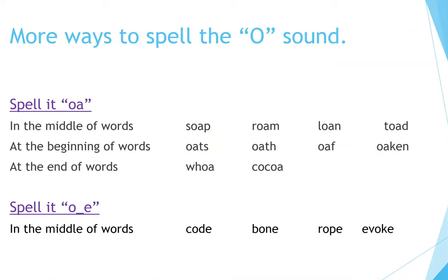More ways to spell the O sound. Spell it OA: in the middle of words — Soap, Roam, Loan, Toad; at the beginning of words — Oats, Oath, Oaf, Oaken; at the end of words — Woe, Cocoa. Spell it O silent E, in the middle of words: Code, Bone, Rope, Evoke.